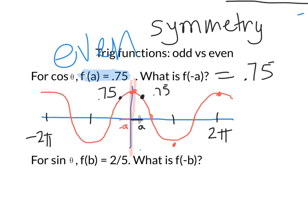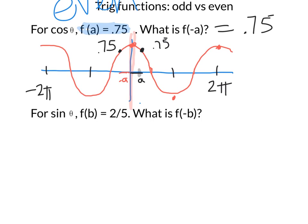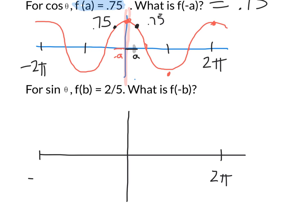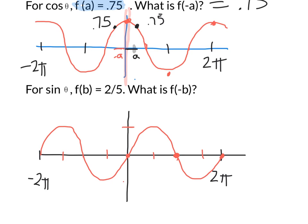So then the question arises: what's an odd trig function? Well, if cosine is even, that means sine is odd. Let me draw the sine graph. Here's the y-axis and x-axis. The standard period is 2π for sine as well. Sine starts at 0 — sine of 0 is 0, sine of 2π is 0, and sine of π is also 0. Sine goes up to a maximum of 1, back to 0, down to a minimum of negative 1, and back to 0 in one period of 2π.